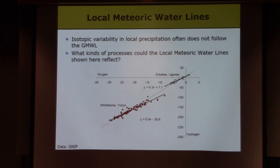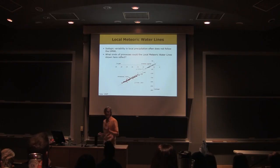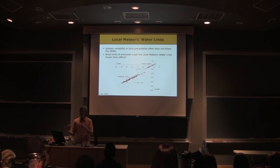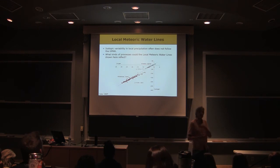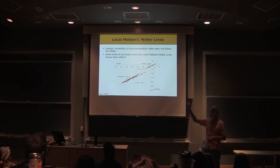And so two things to point out here. One is this can tell us something about the processes that bring moisture to that place. We won't get into this too much, but we can learn from these relationships, and it's going to tell us something about the history of the air, right, that's producing precipitation at different seasons or different times or through different storm systems at these different places. Okay. There's some work out there looking at that.